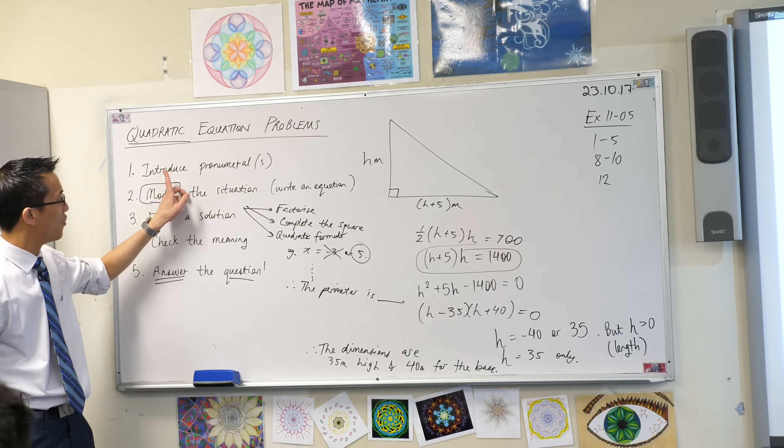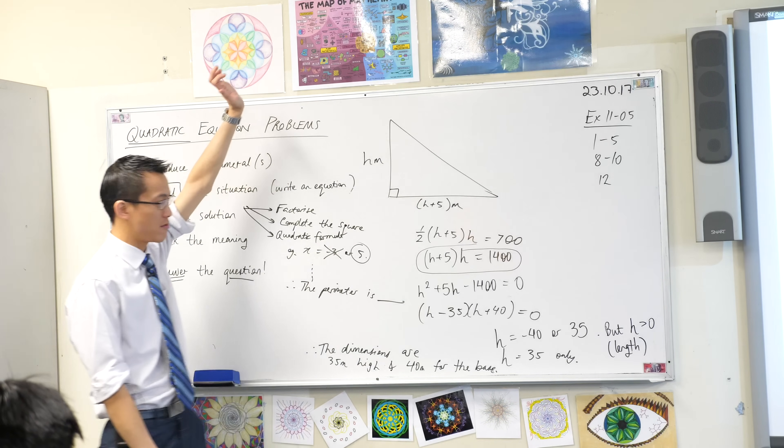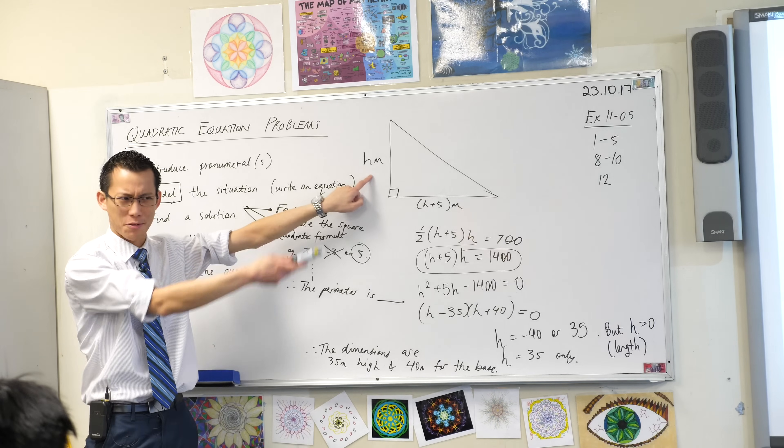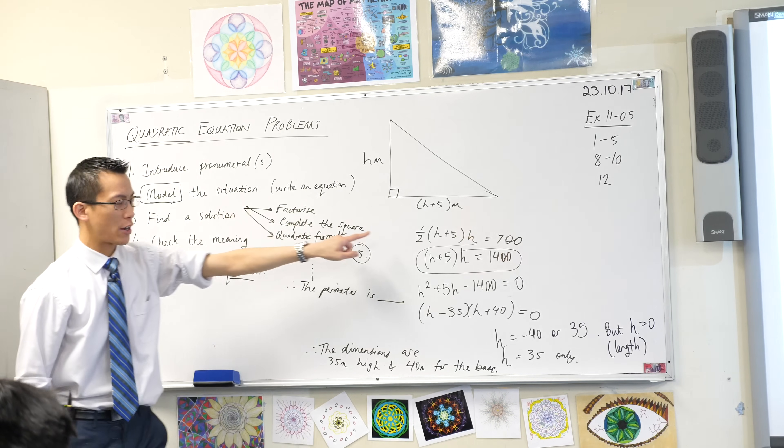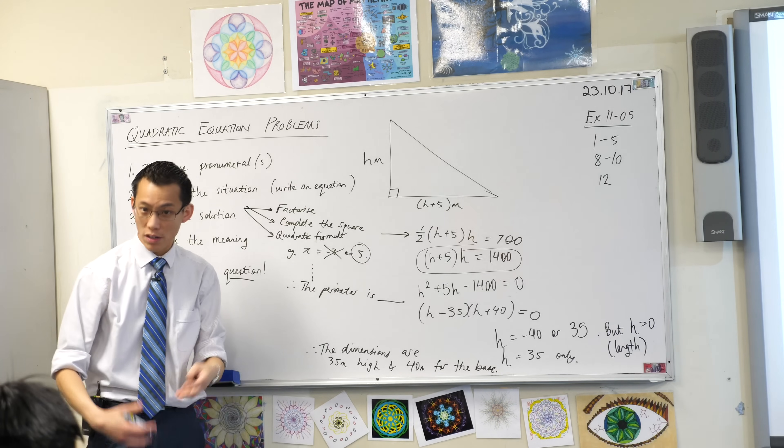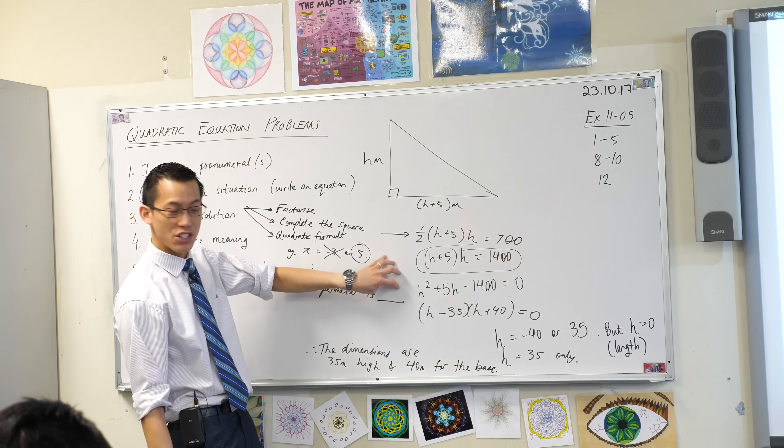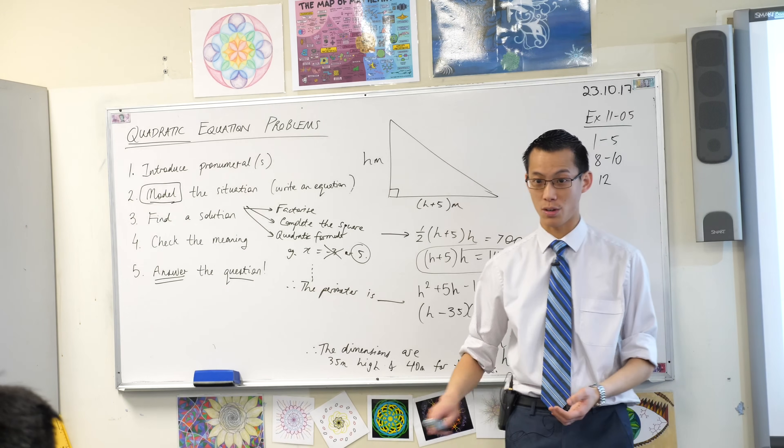You can see, if pronumerals aren't given to you, you just define them. You can make them whatever you like. X, Y, Z, anything. Though it does make sense to choose letters that make sense based on what they've given you in the question. That's why they call it H for height. We modeled it by creating this equation. That might be the hardest part, right there. Because once you come up with that, the rest of it just kind of falls out. Use whatever appropriate strategy works, and have a look at your answer and make sure it makes sense in the context of the question.